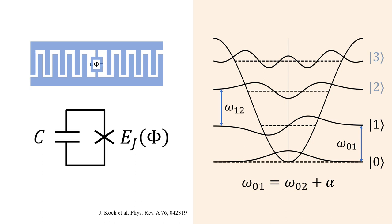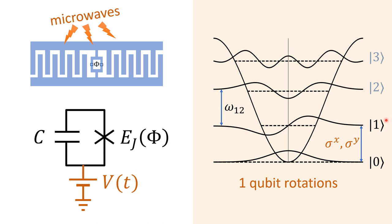The transmon qubit is modeled as a weakly non-linear harmonic oscillator. This cosine potential is induced by the Josephson junction. The eigenstates of this potential have an anharmonic energy level spacing. The distance between 0 and 1 is different from that between 1 and 2. The anharmonicity alpha, which is this difference, can be pretty large, hundreds of megahertz.